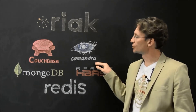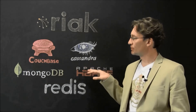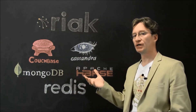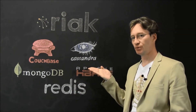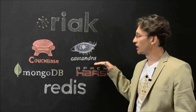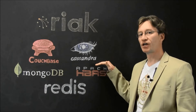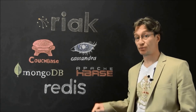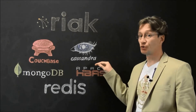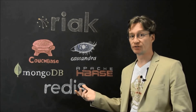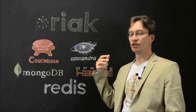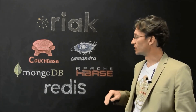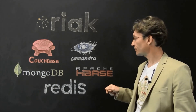Cassandra is a column store, and unlike many others it does actually require quite a bit of work before you can start using it — some data modeling needs to be done. But it is designed for very highly available, highly scalable, and importantly geographically distributed deployments. We have customers with Cassandra clusters with nodes in multiple continents — Singapore, the US, and Europe — always-on, distributed, highly available and scalable.